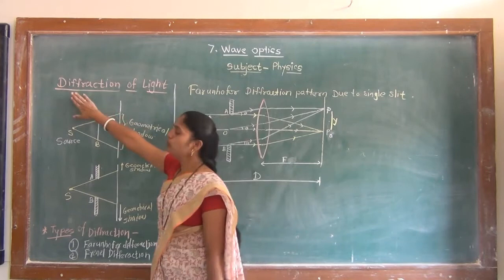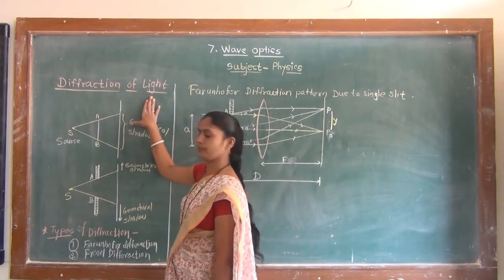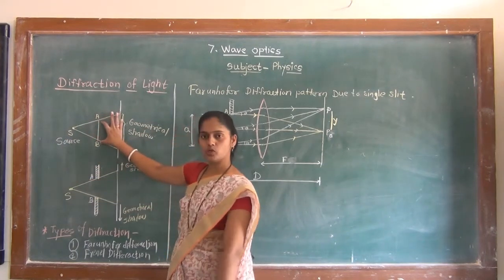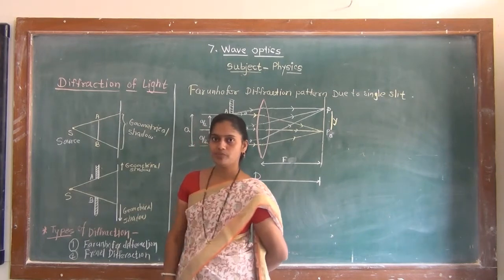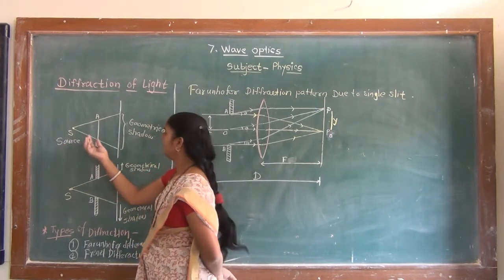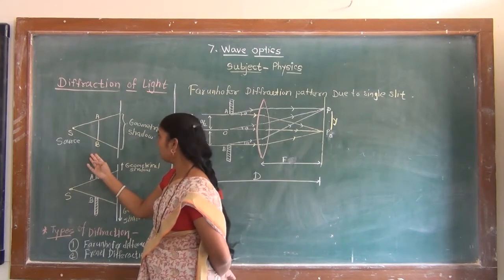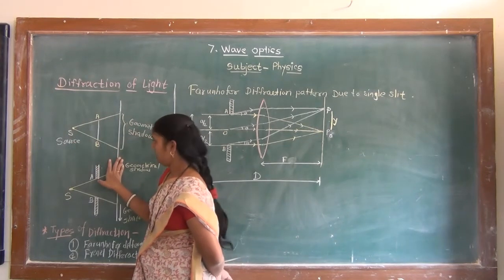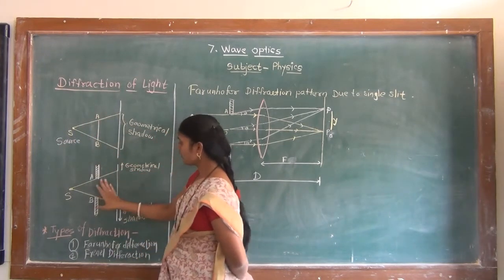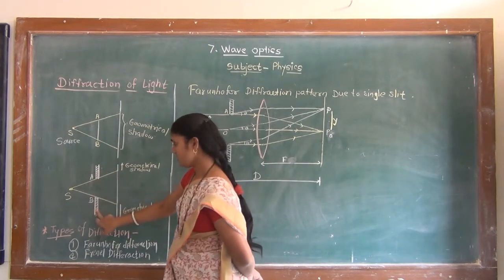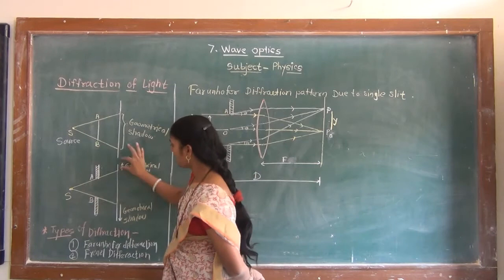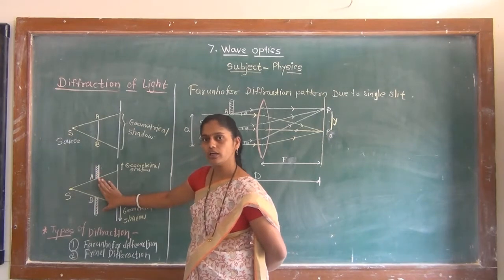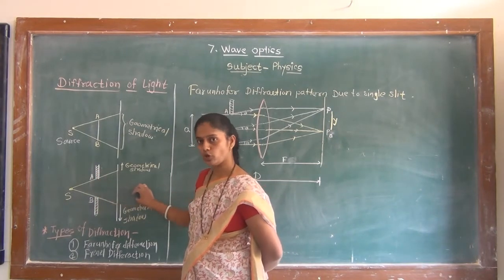Now we will discuss diffraction of light. Here S is the monochromatic source and we have an obstacle AB. When light is incident on this AB obstacle, we get a geometric shadow on the screen. That is the bending of light — nothing but diffraction. In the second case, we again see the geometric shadow, and that is the phenomenon of bending of light around the corner of an obstacle and spreading into the geometrical shadow region.